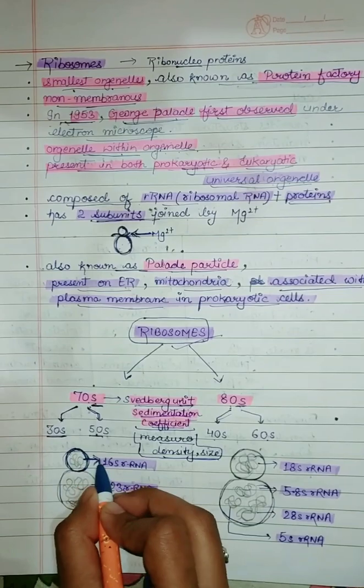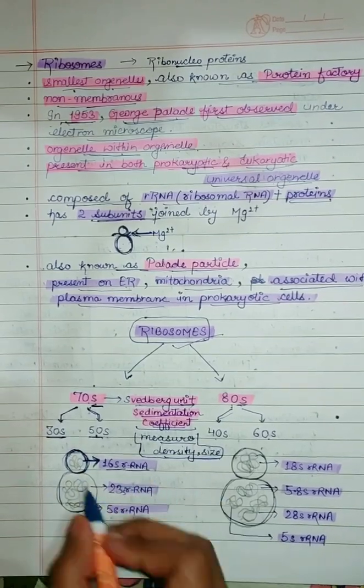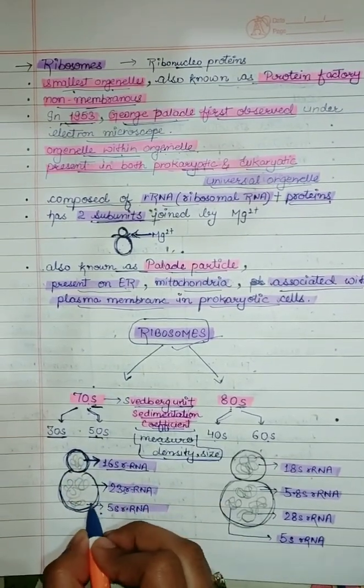In 70S ribosome, the smaller unit contains 16S rRNA and larger unit contains 23S rRNA and 5S rRNA.